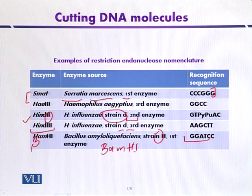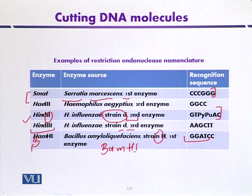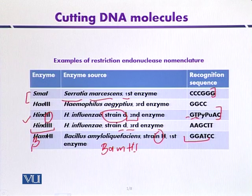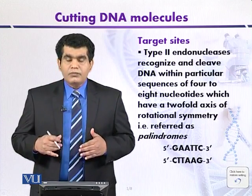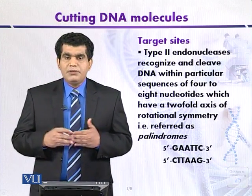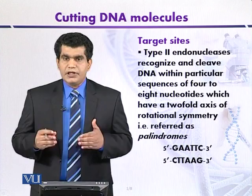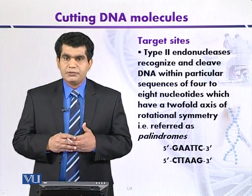The recognition sequence recognized by BamHI is the six base pair sequence GGATCC. The recognition sequence for HindII is represented as: G, T, any purine base, any pyrimidine base, any purine base, A, C. These enzymes may have different restriction sites, which we will discuss in the next chapter.